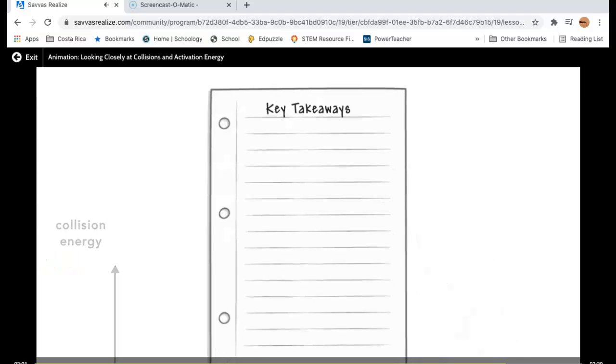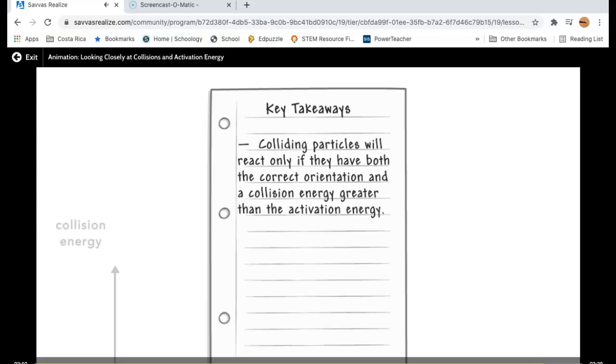Key takeaways: To summarize, colliding particles will react only if they have both the correct orientation and a collision energy greater than the activation energy. As temperature increases, a greater number of collisions will have enough energy, so the reaction rate will increase.